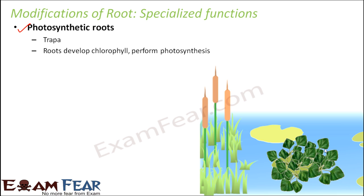This is how a trappa looks like. They have these kinds of leaves and the roots are also present on the surface of the water. So these are an example of photosynthetic roots.